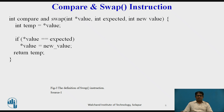When a process exits the critical section, it sets lock back to zero, which allows another process to enter its critical section. The structure of process Pi is shown in this diagram.